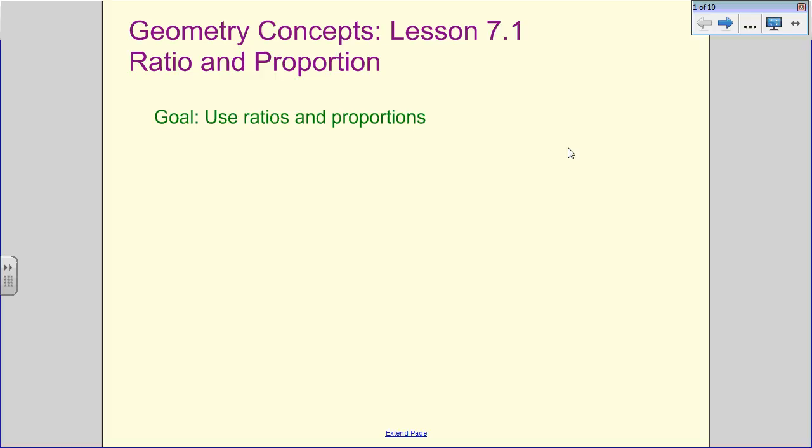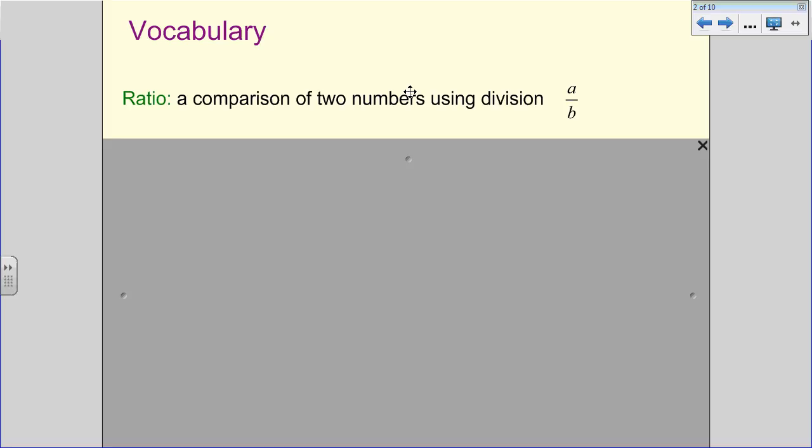But today we're just going to be basically a nice algebra review. All right, so here's our vocabulary. A ratio is a comparison of numbers using division. So we look at it as A over B. It's basically looking at fractions.